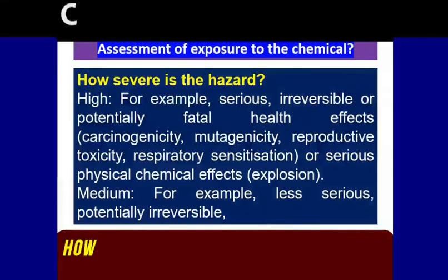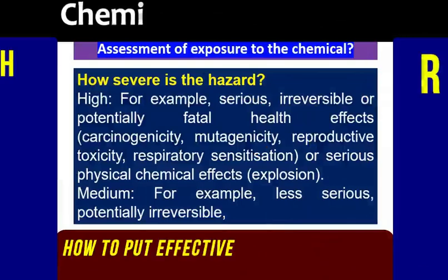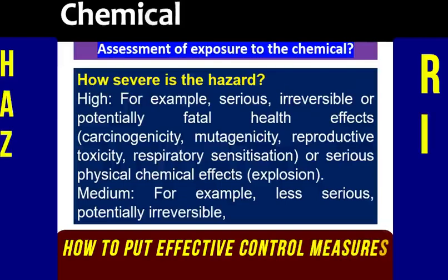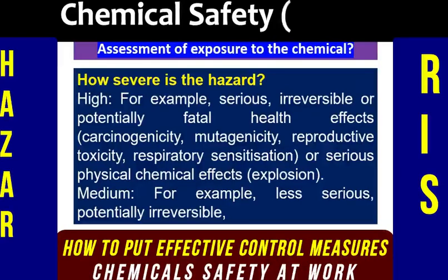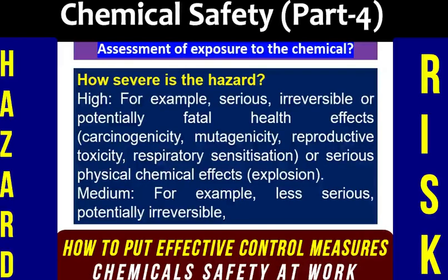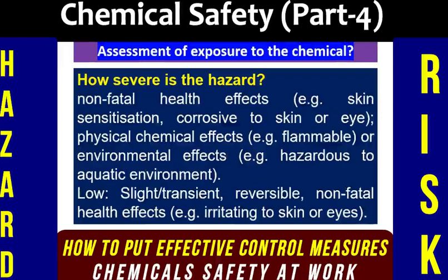Let us learn how severe the hazard of a chemical can be. There are three levels of risk: high, medium, and low. For high risk — serious, irreversible, or potentially fatal health effects, such as carcinogenicity, mutagenicity, reproductive toxicity, respiratory sensitization, or serious physical chemical effects like explosion. For medium risk — less serious, potentially irreversible, non-fatal health effects, such as skin sensitization, corrosive to skin or eyes, physical chemical effects like flammable, or environmental effects like hazardous to the aquatic environment. These categories come under medium risk and are important examples when making a risk assessment for chemicals on site.